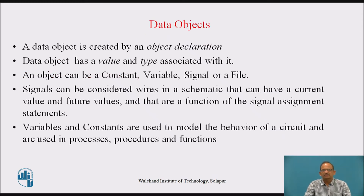A data object is basically created by an object declaration. Every data object has a value and a type associated with it. An object can be a constant, a variable, a signal, or a file. Signals can be considered as wires in a schematic that can have a current value and future value, and that are a function of a signal assignment statement. Variables and constants are used to model the behavior of a circuit and are used in processes, procedures, and functions.